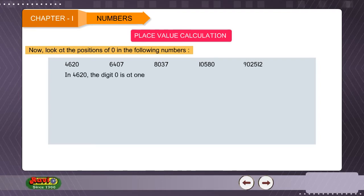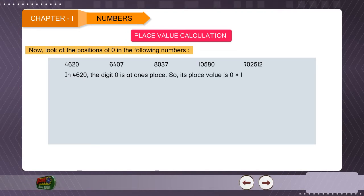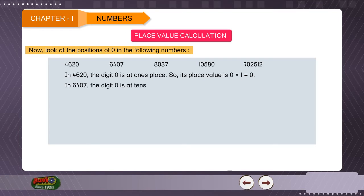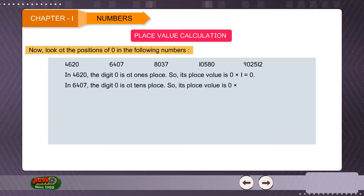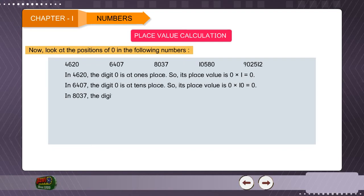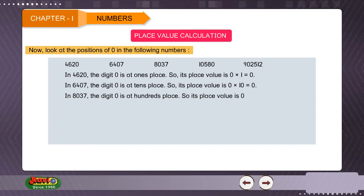In 4620, the digit 0 is at the 1's place, so its place value is 0 × 1 = 0. In 6407, the digit 0 is at the 10's place, so its place value is 0 × 10 = 0. In 8037, the digit 0 is at the 100's place, so its place value is 0 × 100 = 0.